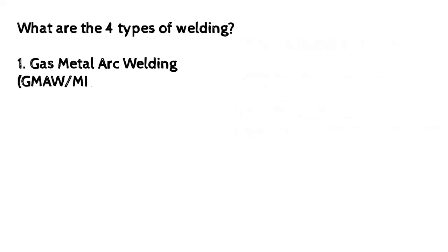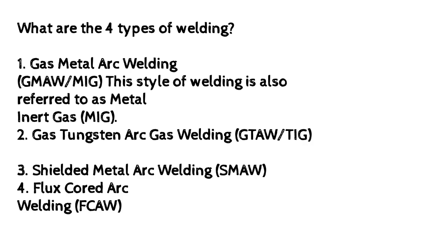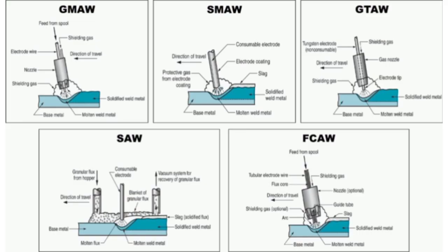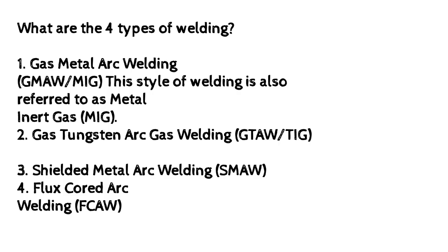What are the four types of welding? 1. Gas metal arc welding (GMAW) — this style of welding is also referred to as metal inert gas (MIG). 2. Gas tungsten arc welding (GTAW). 3. Shielded metal arc welding (SMAW). 4. Flux cored arc welding (FCAW).